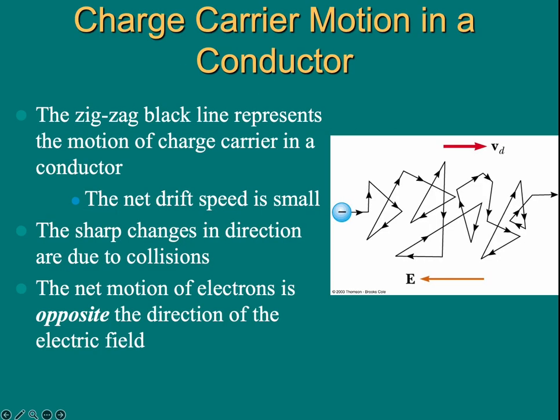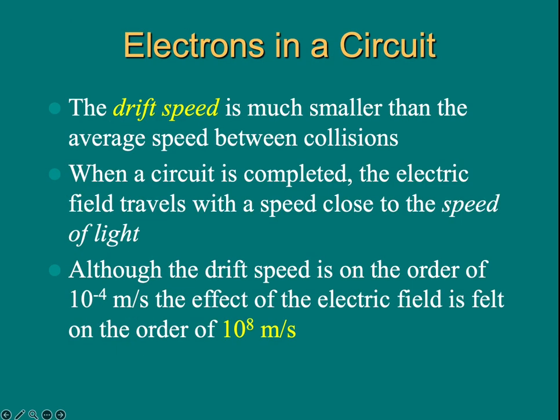In this picture, the zigzag blackness represents the actual motion of a charge carrier in the conductor. Because of the random bouncing in all directions, the drift speed for the charge carrier in terms of metal is very, very small. The sharp changes in directions are due to collision of electrons with ions and maybe other electrons. The net motion of the electron is opposite to the direction of the electric field. The drifting speed is much, much smaller than the average speed between collisions.